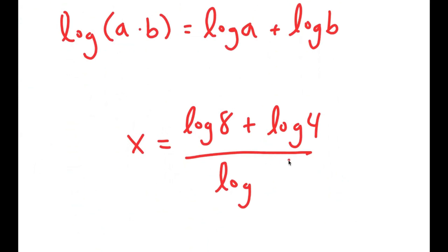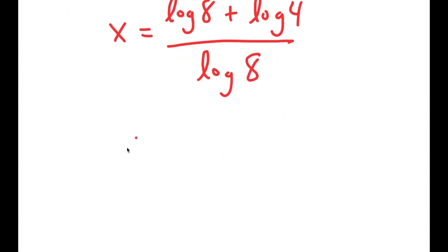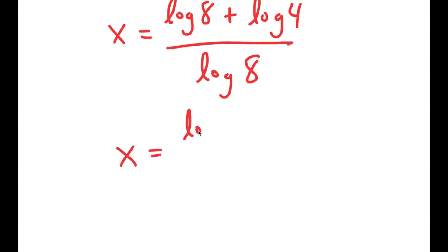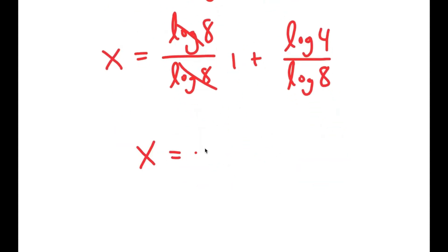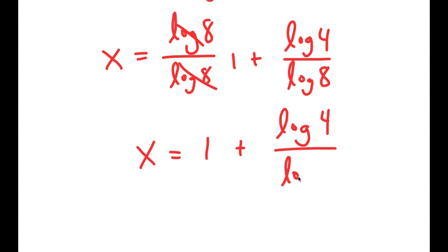I have this over log of 8. This turns into log 8 over log 8 plus log 4 over log 8. These two cancel out to get 1. So I get x is equal to 1 plus log of 4 over log of 8.